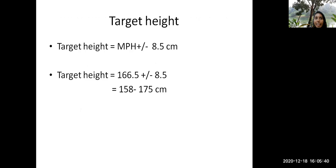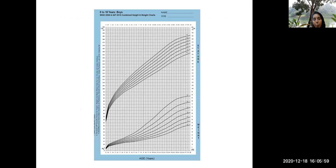Now the target height, I've taken two standard deviations here. It is 166.5 plus or minus 8.5 centimeters. The range will be 158 to 175 centimeters. If you want to take one standard deviation difference with MPH, you take six centimeters. So I have taken again IAP WHO charts, please download it and plot it.